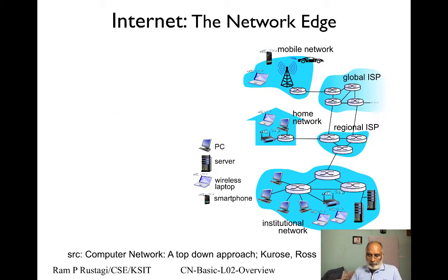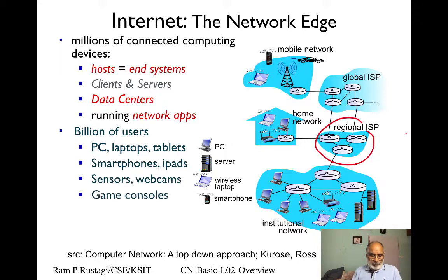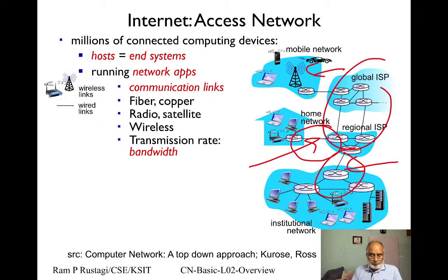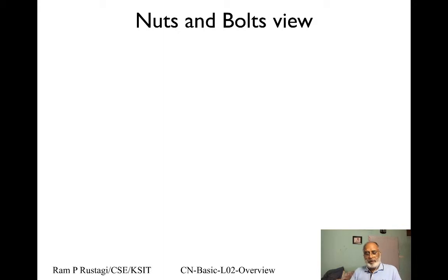When you look at the internet in terms of PCs, end systems, routers, servers, and link infrastructure — not looking at what the internet gives us, but at its hardware components — this is called the nuts and bolts view. We are looking at the devices in terms of hardware required, access links required, and bandwidth — how much we can communicate.